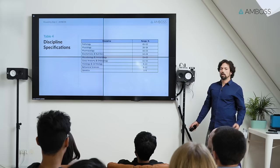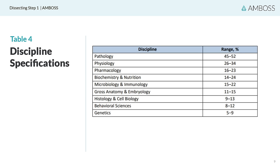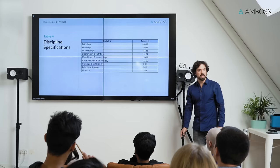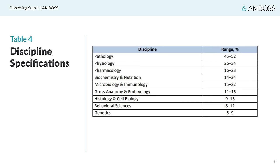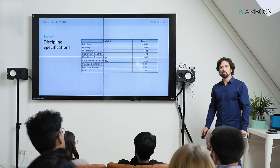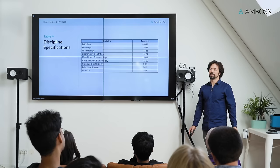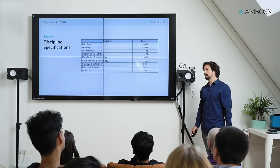Now, what about the disciplines? Pathology, physiology, all the way down to genetics. How can we use this to our advantage? If you see that pathology is roughly half of the exam and genetics is less than 10%, which topic should you be focusing on first? Not genetics — you should be focusing on pathology. Make sure you've got your pathology down before you start getting into the details of genetics.